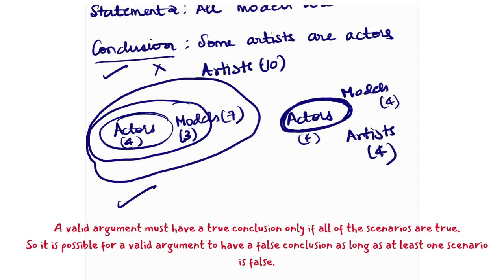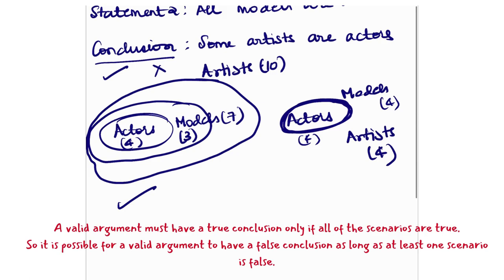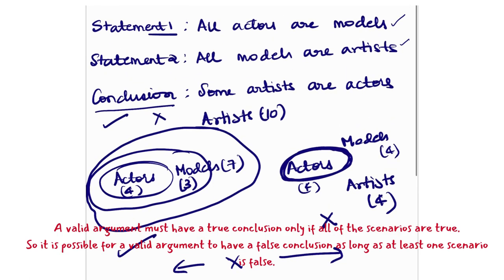So in this case, what we have to see is some artists are actors? No. In this case, what is happening is all artists are actors, not some. And in this case, hence, the conclusion is false. So in one case, it is true. In the other case, it is false. And hence, the conclusion is false. So that is how you look at these kinds of problems to solve them.